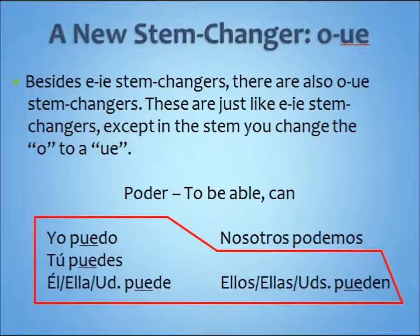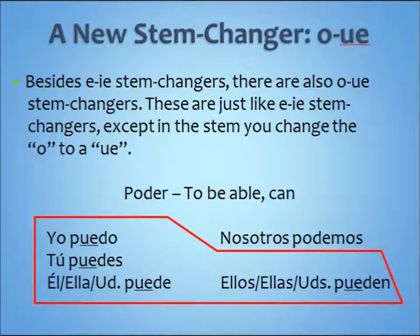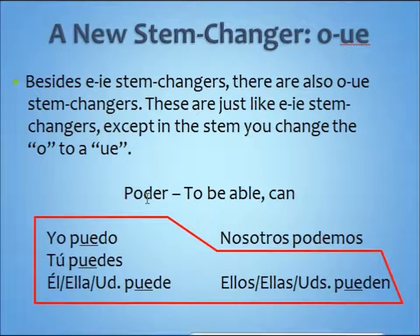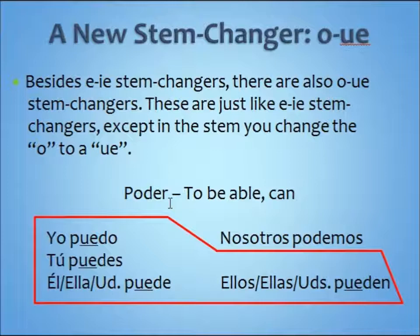Now for a new stem changer: o to ue. These are just like e to ie stem changers except in the stem you change an o to a ue. For example, take the verb poder, which means to be able, or can. If we follow our same three steps — take off the ending — you're left with pod. Change that o in the stem to a ue in all the forms except nosotros. Then add your er endings: o, s, e, -emos, -en. You've got puedo, puedes, puede, podemos, and pueden, to talk about what people can do.